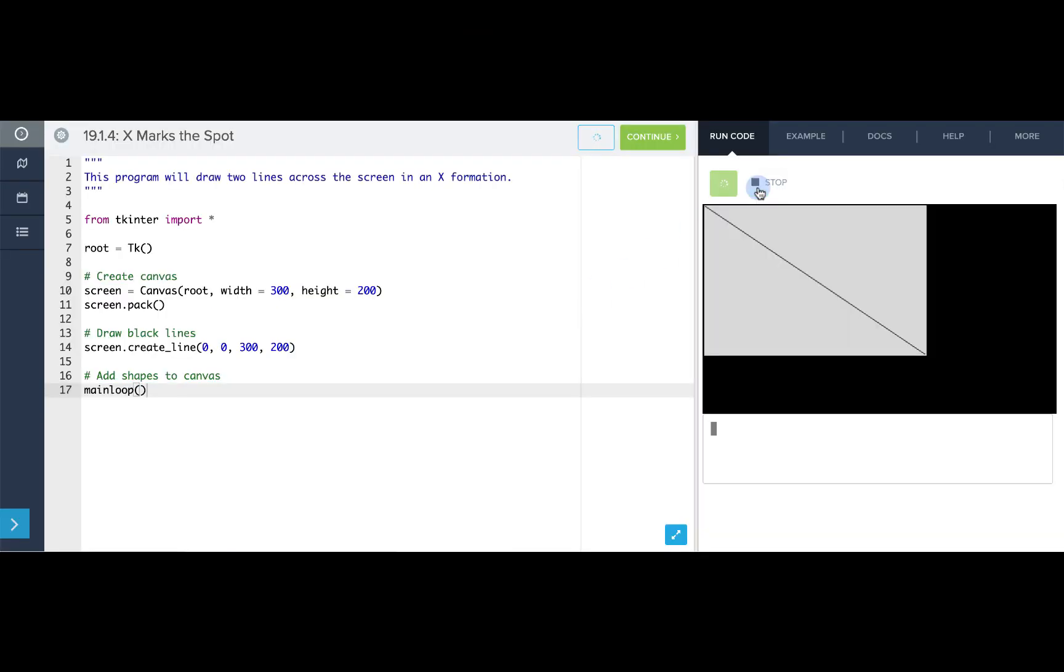When we run this code, we'll see that we have a canvas with a width of 300 and a height of 200 that has a gray background. We've also drawn one line that has an xy coordinate of 0, 0 as this position and a second point as 300, 200.